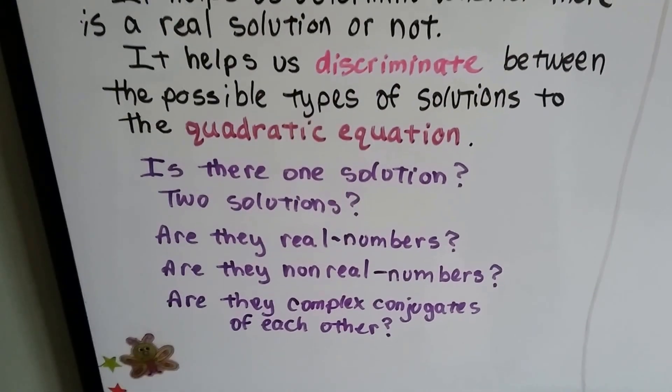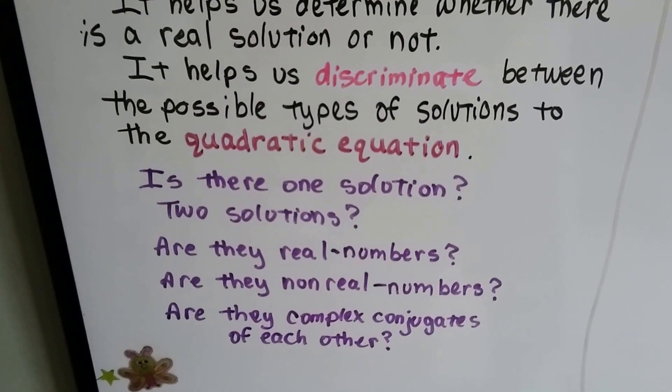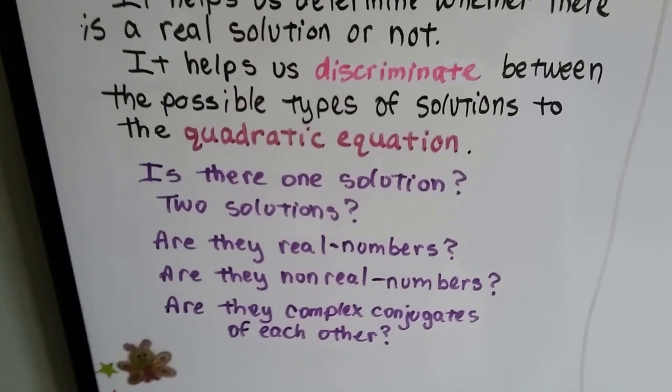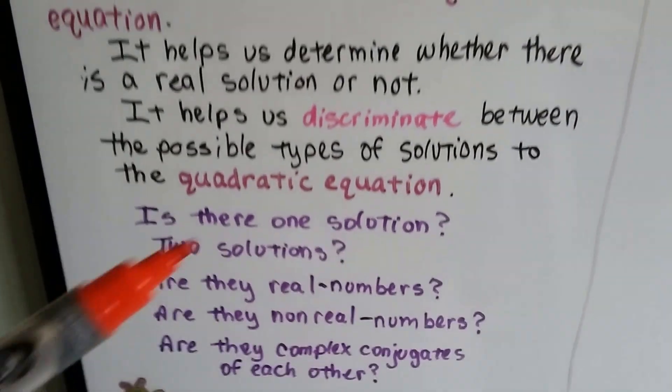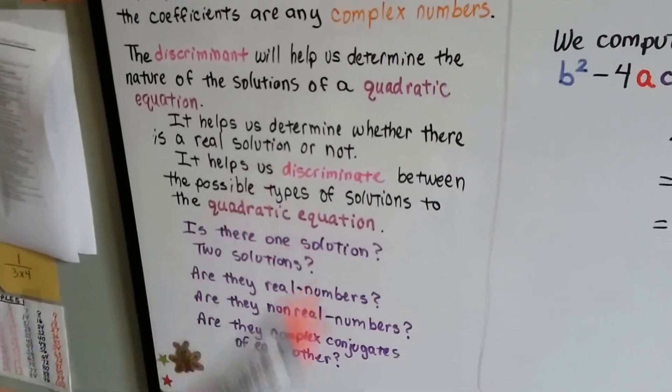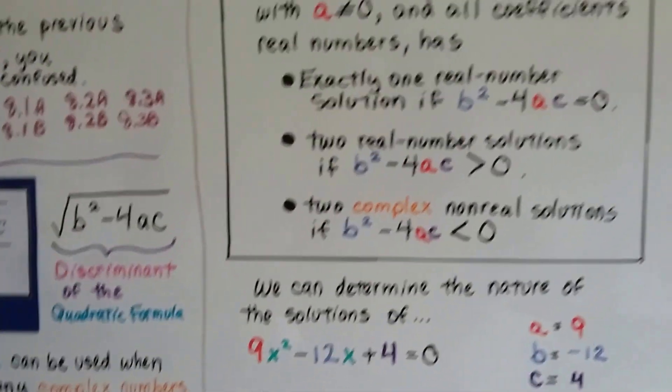We'll be able to know, is there one solution, two solutions? Are they real numbers? Are they non-real numbers? And are they complex conjugates of each other? All from the discriminant. Isn't that cool? Isn't he helpful? So here's our theorem.